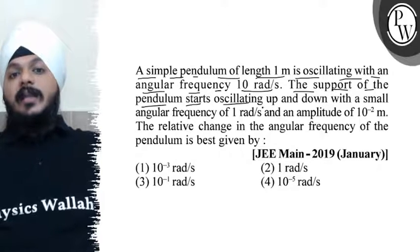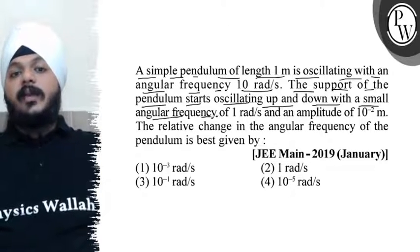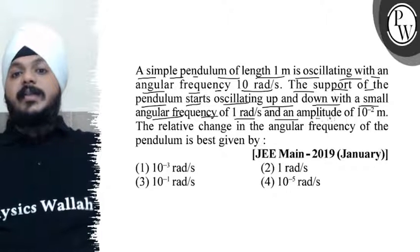The support of the pendulum starts oscillating up and down with a small angular frequency of 1 radian per second and amplitude of 10^-2 meters.